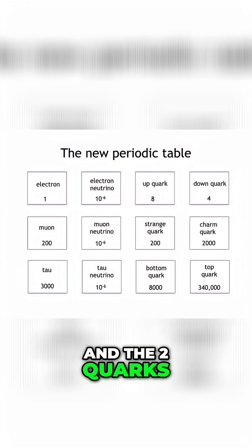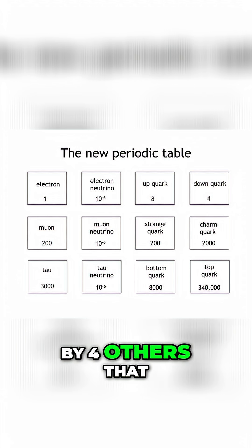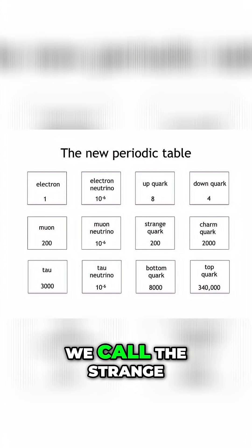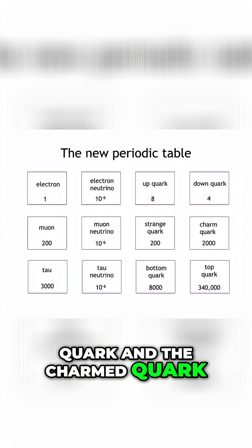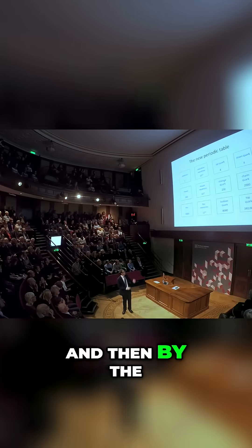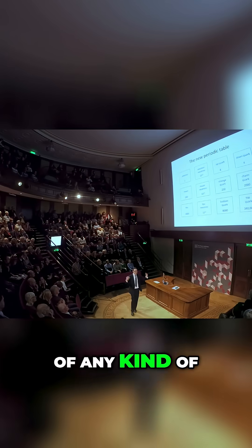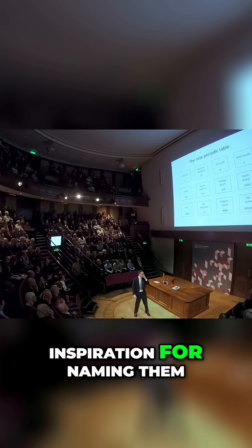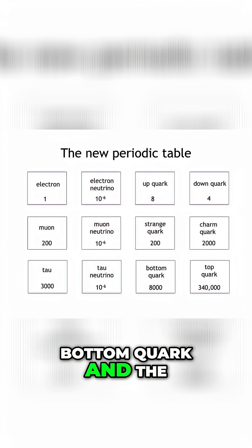The two quarks that we first knew about are now joined by four others that we call the strange quark and the charmed quark. And then, by the time we got here, we really ran out of any kind of inspiration for naming them — we call them the bottom quark and the top quark.